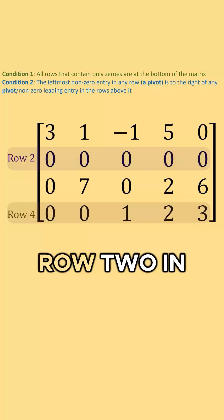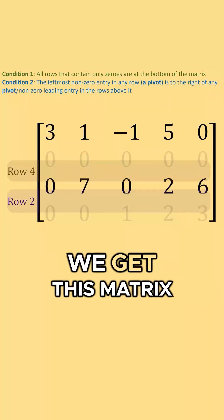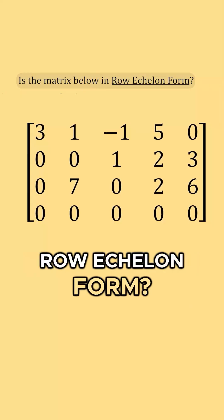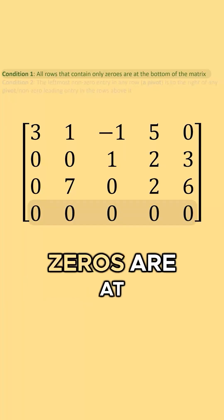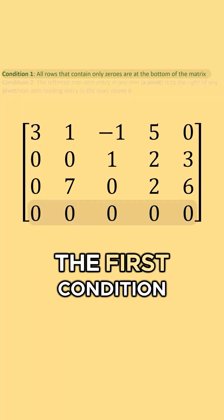What if we switch row 2 and row 4? We get this matrix. Is it in row echelon form? The rows that contain zeros are at the bottom, so we satisfy the first condition.